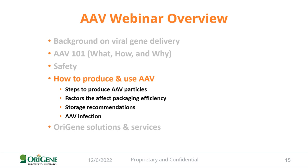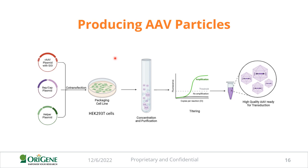To produce AAV, we use HEK-293T cells. First, plate the HEK-293 cells, then co-transfect the AAV transfer plasmid containing your gene of interest with the packaging plasmid — a helper plasmid and a rep/cap plasmid. Change the media and incubate for 48 hours, then harvest the cell culture supernatants on day five. From there, you perform purification and concentration, followed by titering to obtain high-quality, high-titer AAV ready for transduction.